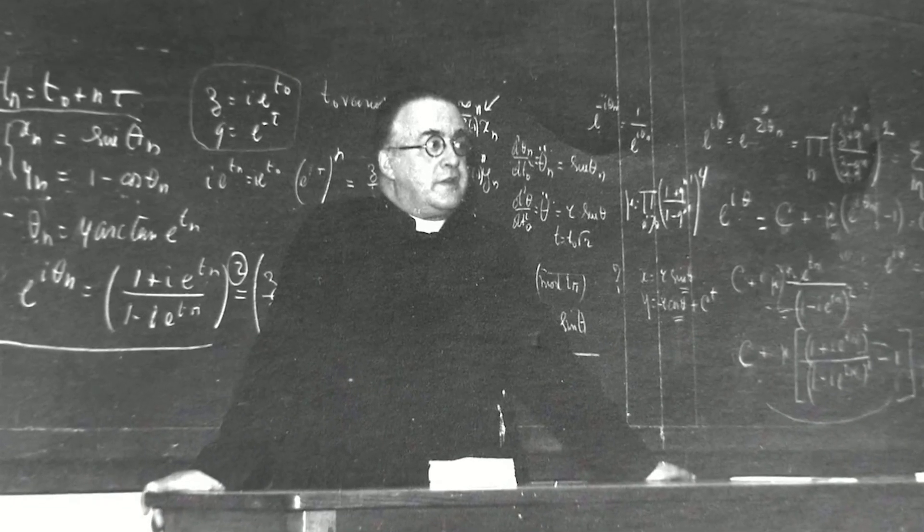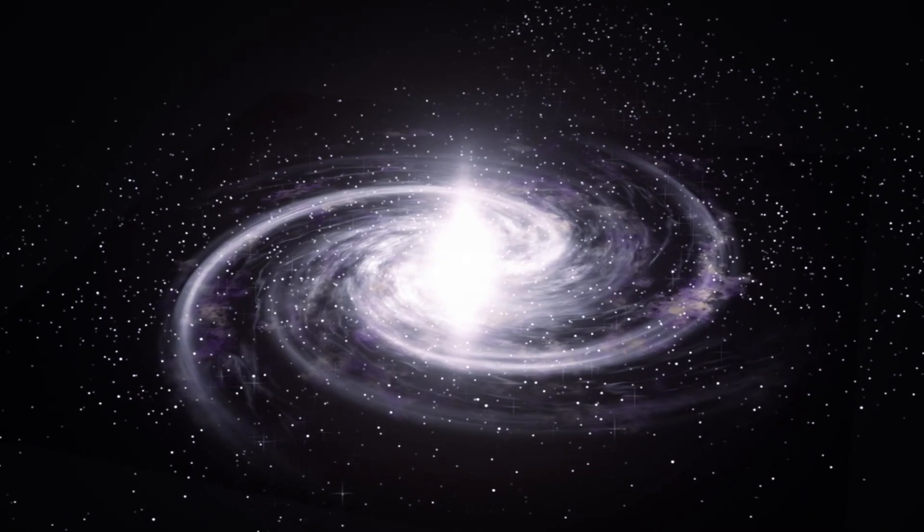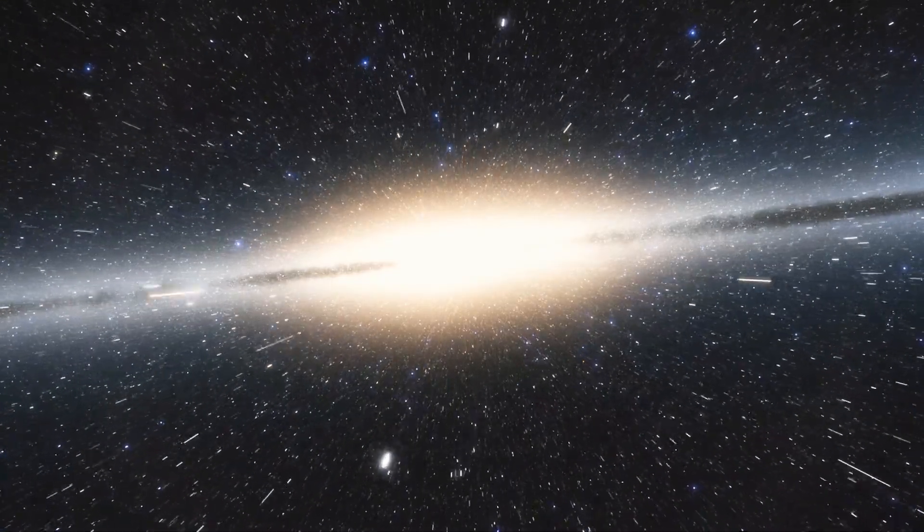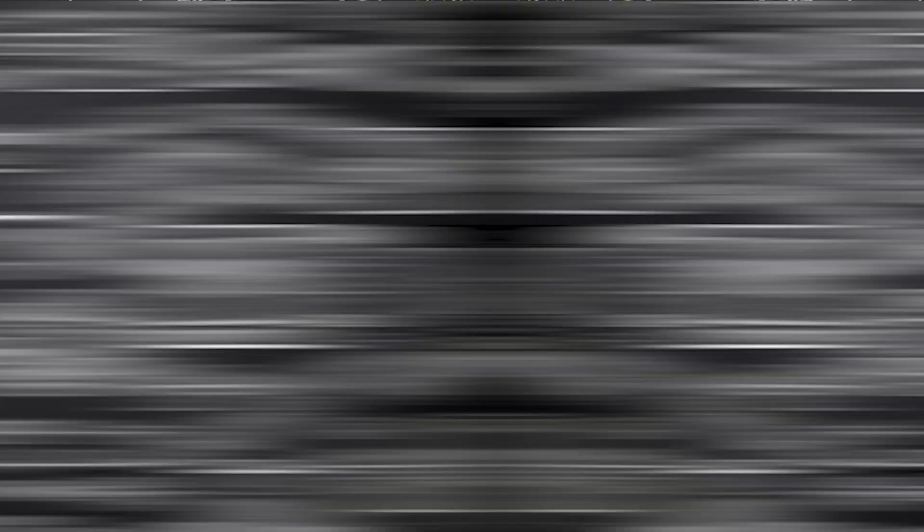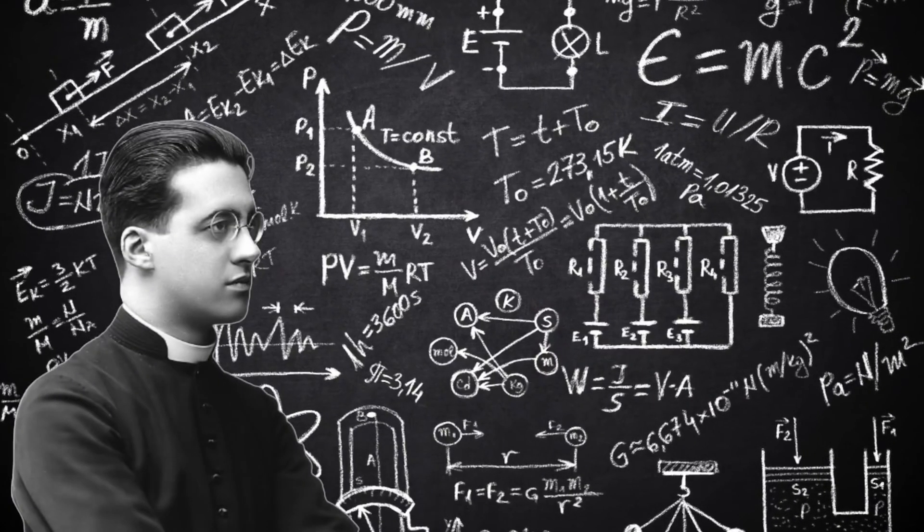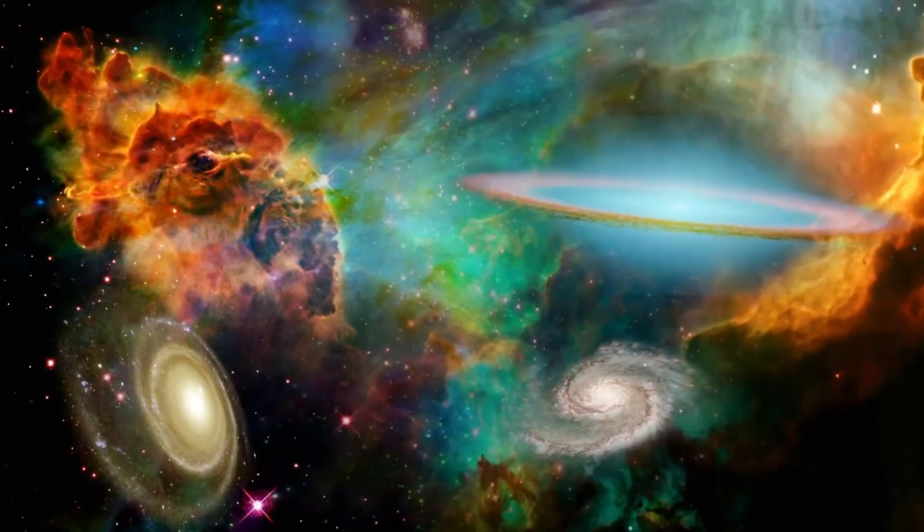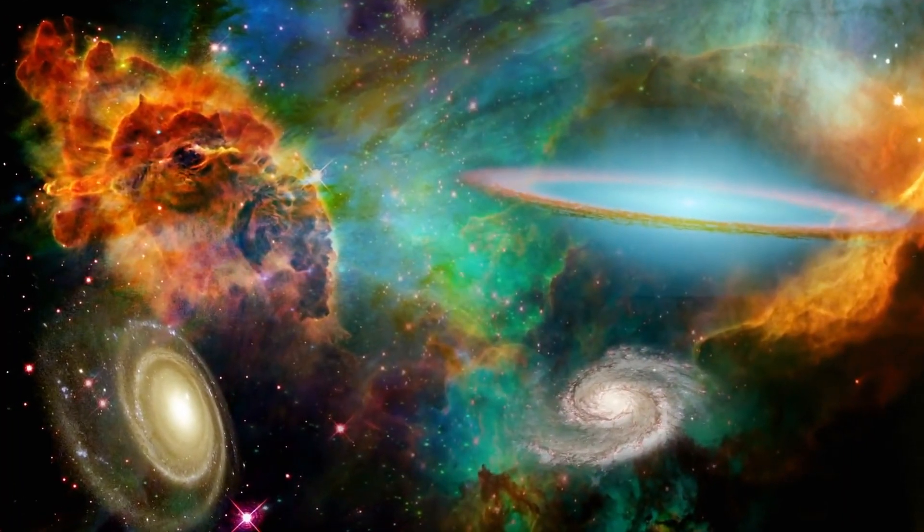Lemaitre suggested that the universe itself is expanding, and it came from an infinitely dense singularity that gave birth to all things that exist in the entire cosmos. But this theory was not entirely accepted at first and received backlash because it was a very exotic and complicated way to explain the beginning of our universe.